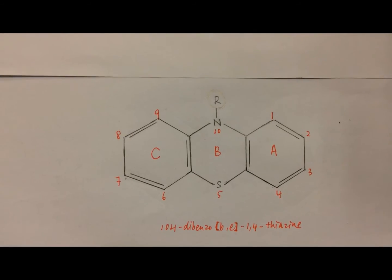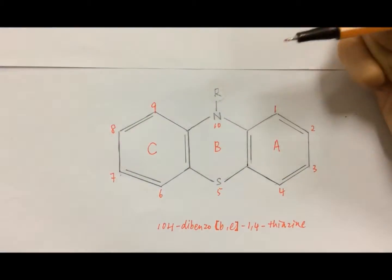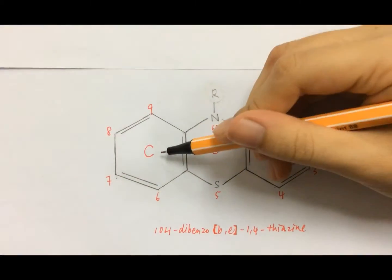This is a phenothiazine ring. The numberings will be clockwise as we can see here. The rings are named as A, B, and C.